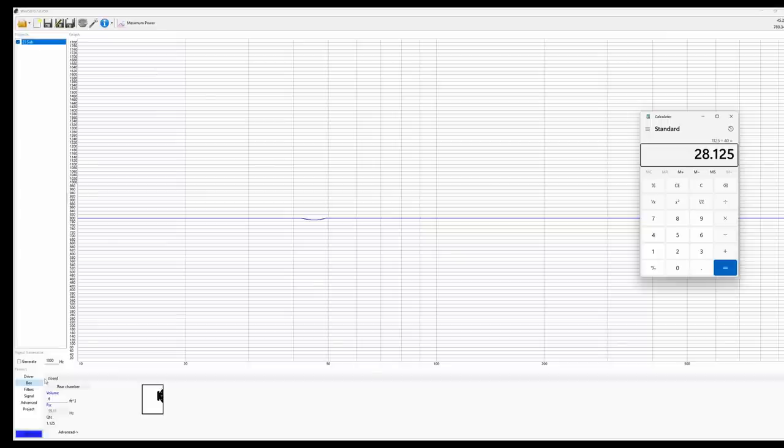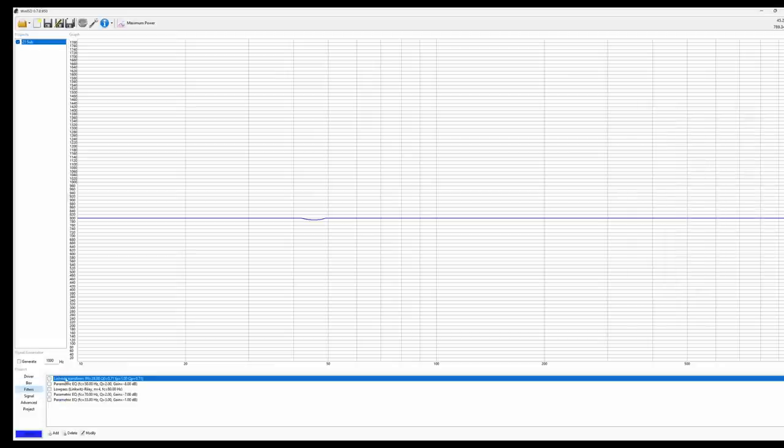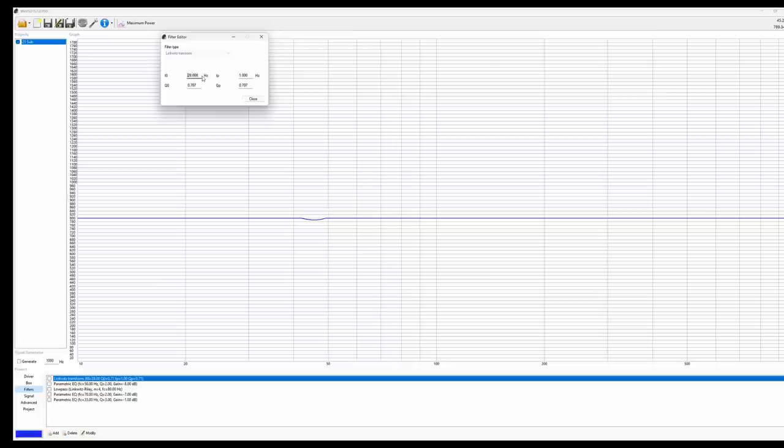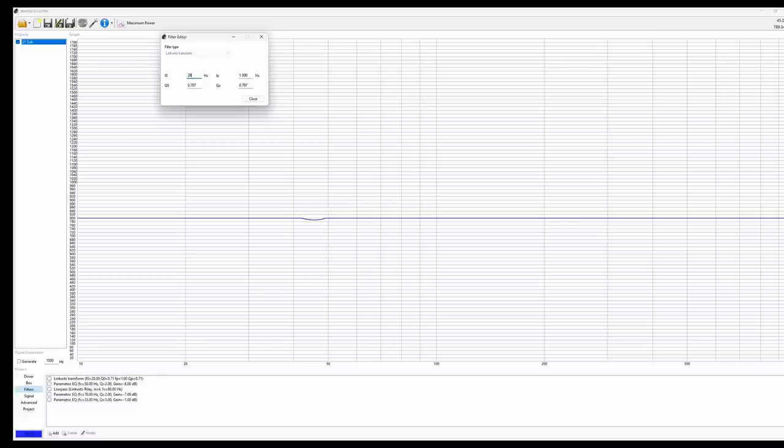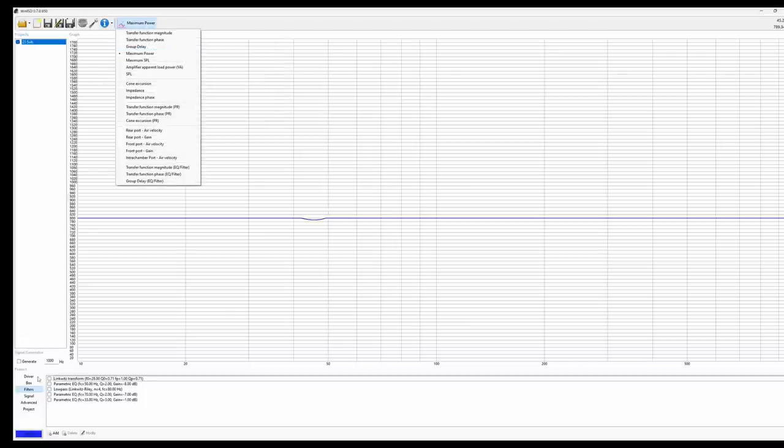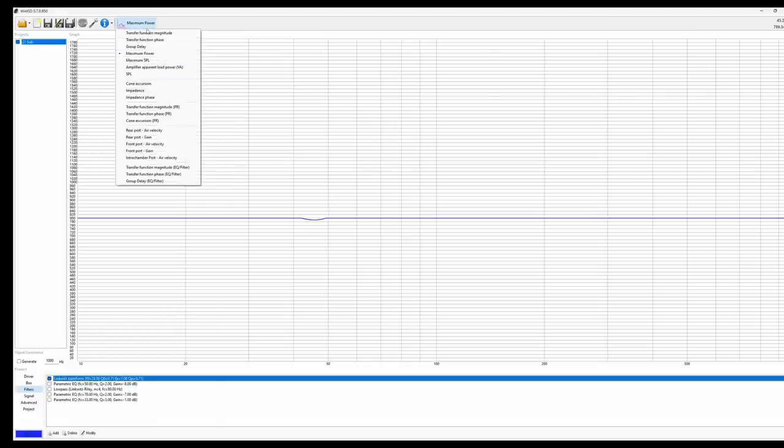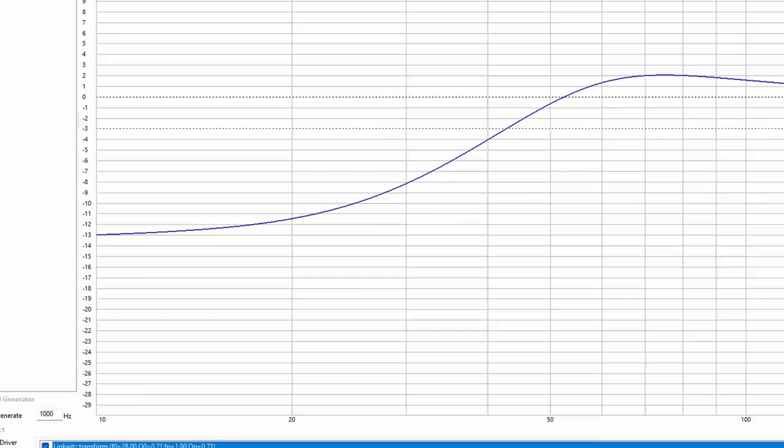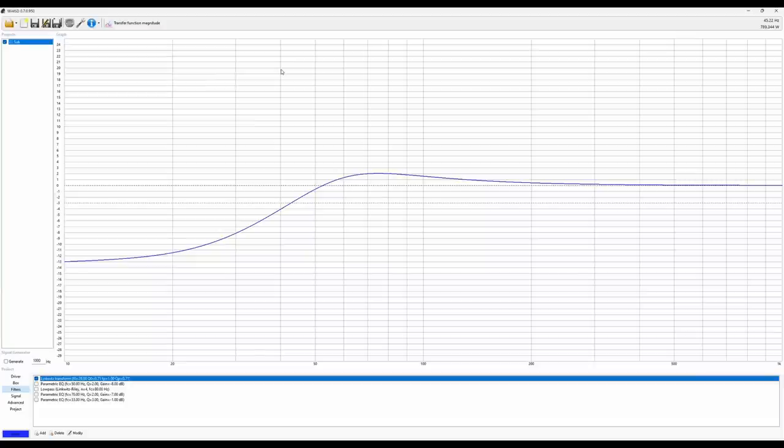That's 28 hertz. If we go to our filters we can create a Linkwitz transform and add 28 hertz as the F0. The Q is going to be 0.707 on both, and we're expecting that gain to go all the way down to one hertz. Now we'll activate that and go back to our transfer function magnitude. That's looking a little bit better - we're still down 13 decibels at 10 hertz, but we're gaining some more low end back.